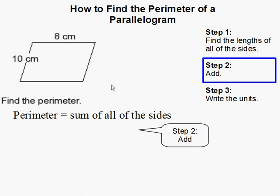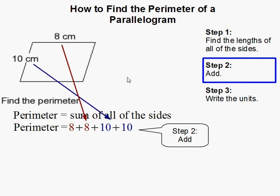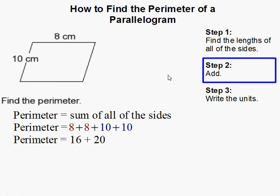By the definition of a parallelogram, the opposite sides of a parallelogram are equal. So now we can add them up. This is 8 plus 8 because I have this one and this one, and this is 10 plus 10 because I have this plus this.